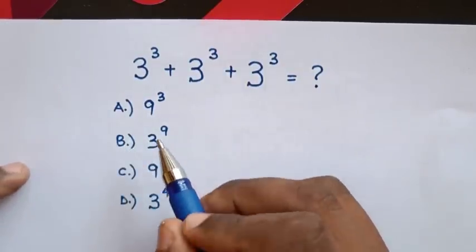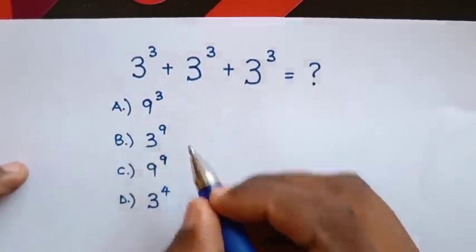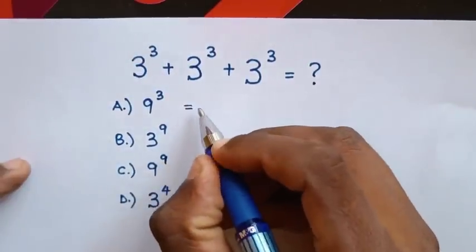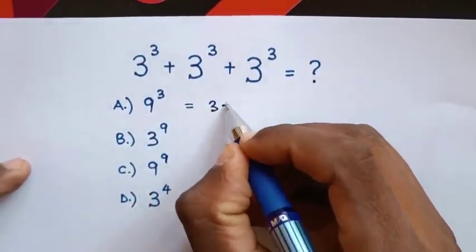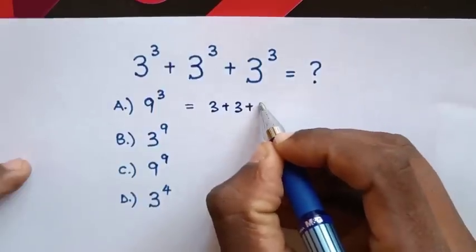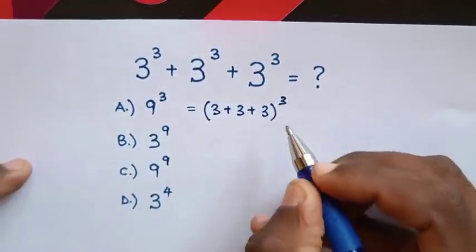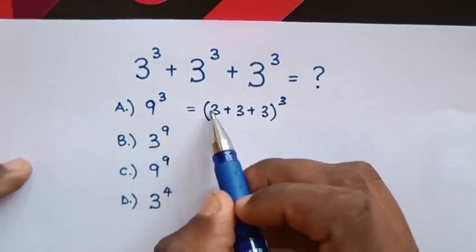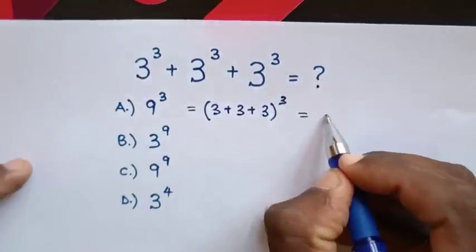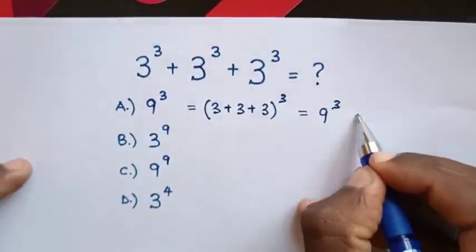From A, 9³ equals (3+3+3)³. The sum of the base 3+3+3 equals 9³, which is wrong.